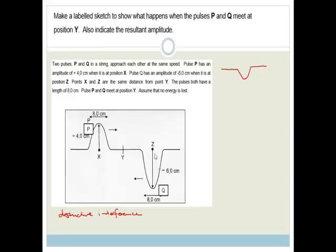The resultant, you can see that this is positive 4 up and minus 6 down. So the resultant is going to be minus 2. So they've asked you to indicate a labeled sketch. So this would be the resultant amplitude of minus 2. And that is what's happening when P and Q cross each other.